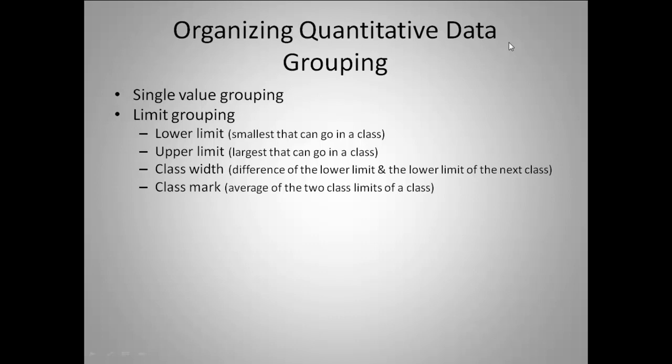More commonly though, we will use something like limit grouping. When you have limit grouping, you are putting the data into classes that have a range of numbers. We might have from 10 to 20 be one of our classes. When we do limit grouping, the lower limit is the smallest that can go into a class. So if my classes are from 0 to 9 and then 10 to 19 and 20 to 29, my lower limit for this middle group would be 10. The upper limit is the largest number that can go into that class, so it would be 19 in this case.